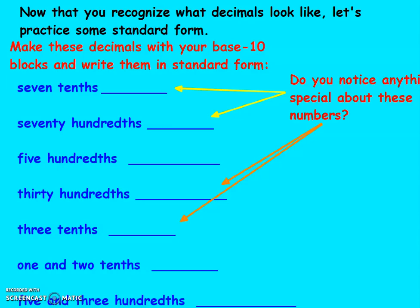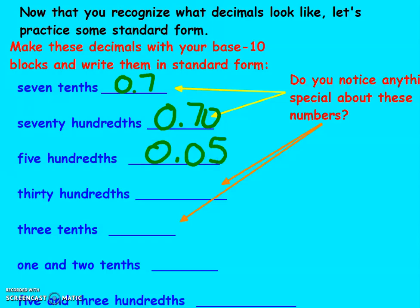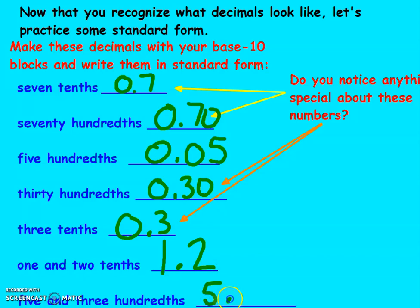Seven tenths would be 0.7. Seventy hundredths — you should have written zero and seventy hundredths. Five hundredths — 0.05, remember hundredths is two spaces after the decimal. Thirty hundredths — I write thirty hundredths as three tenths, which is right after the decimal. One and two tenths — I have one whole and decimal two tenths. Five and three hundredths — I have no tenths, so I need to put a zero there.